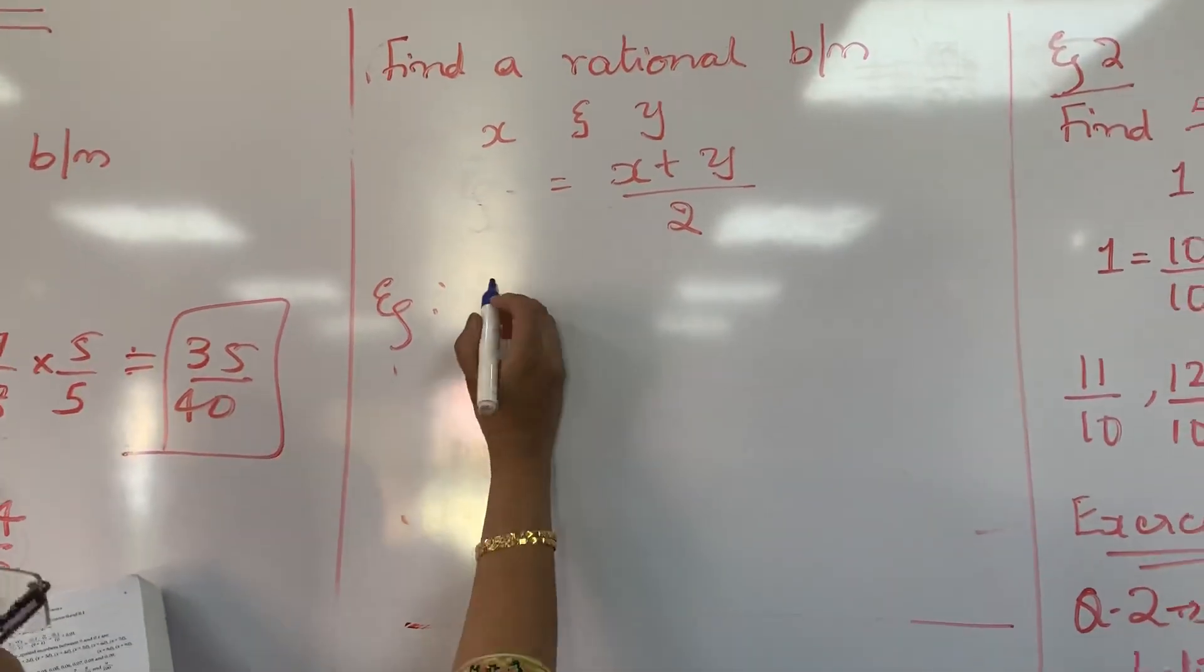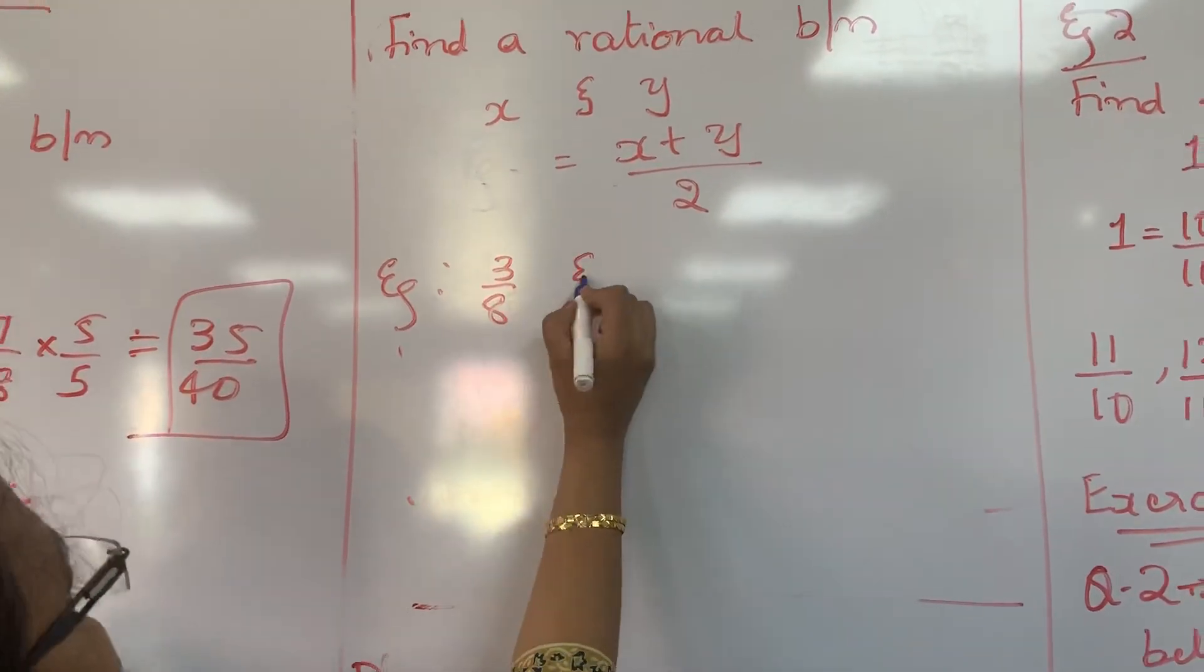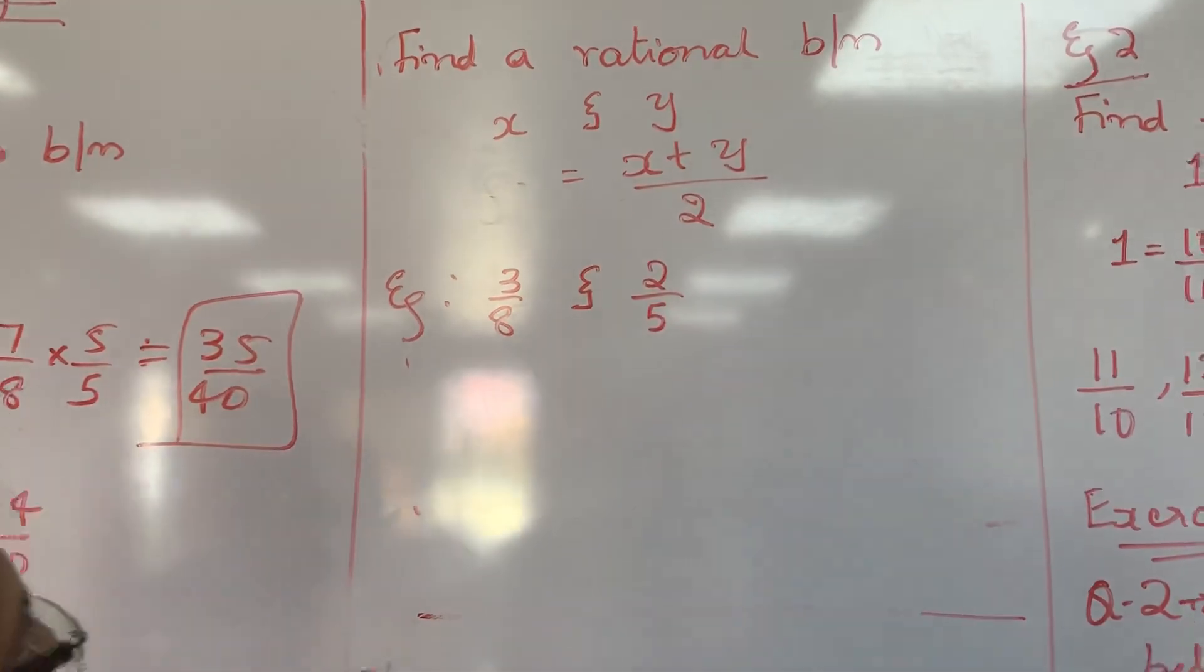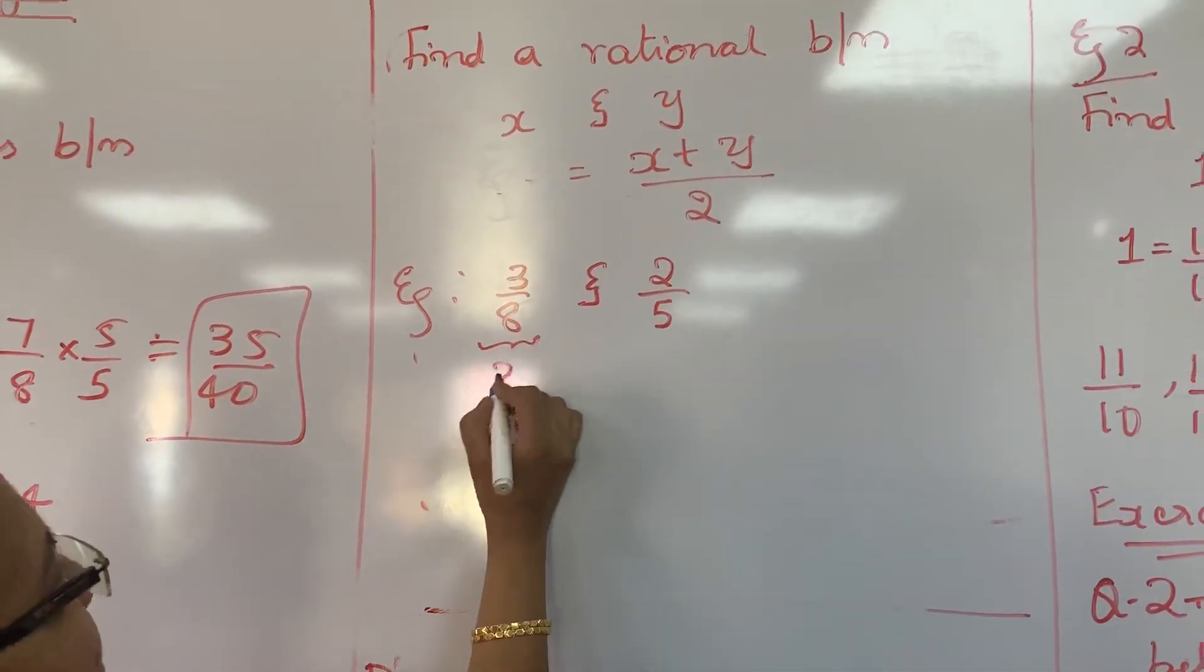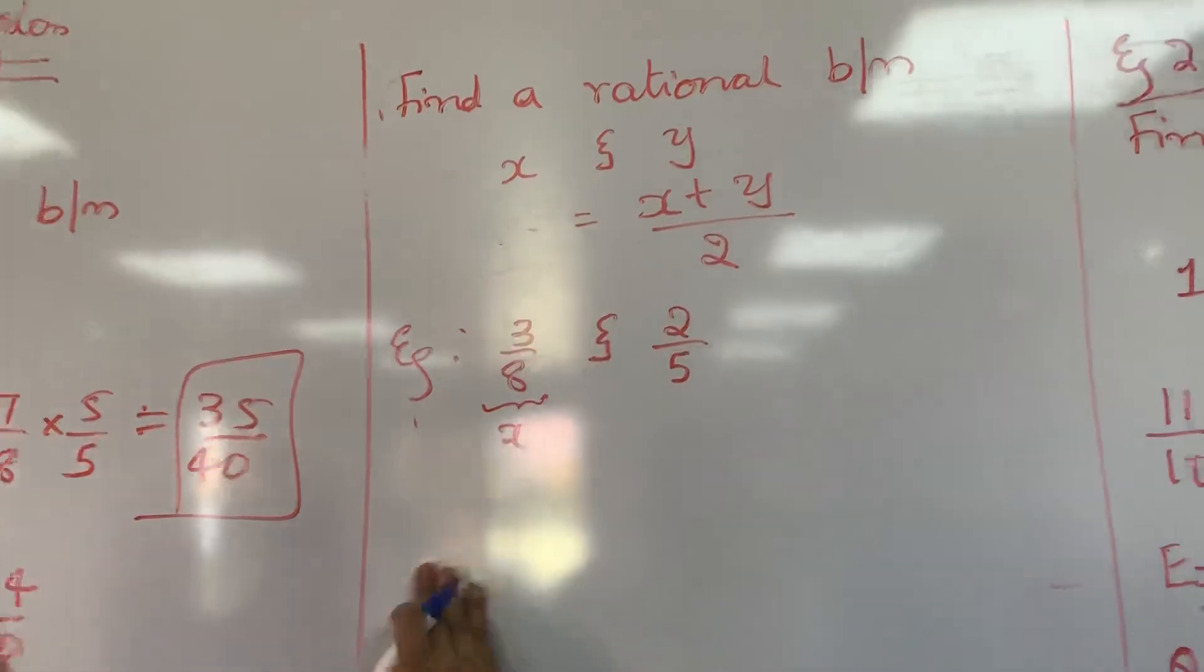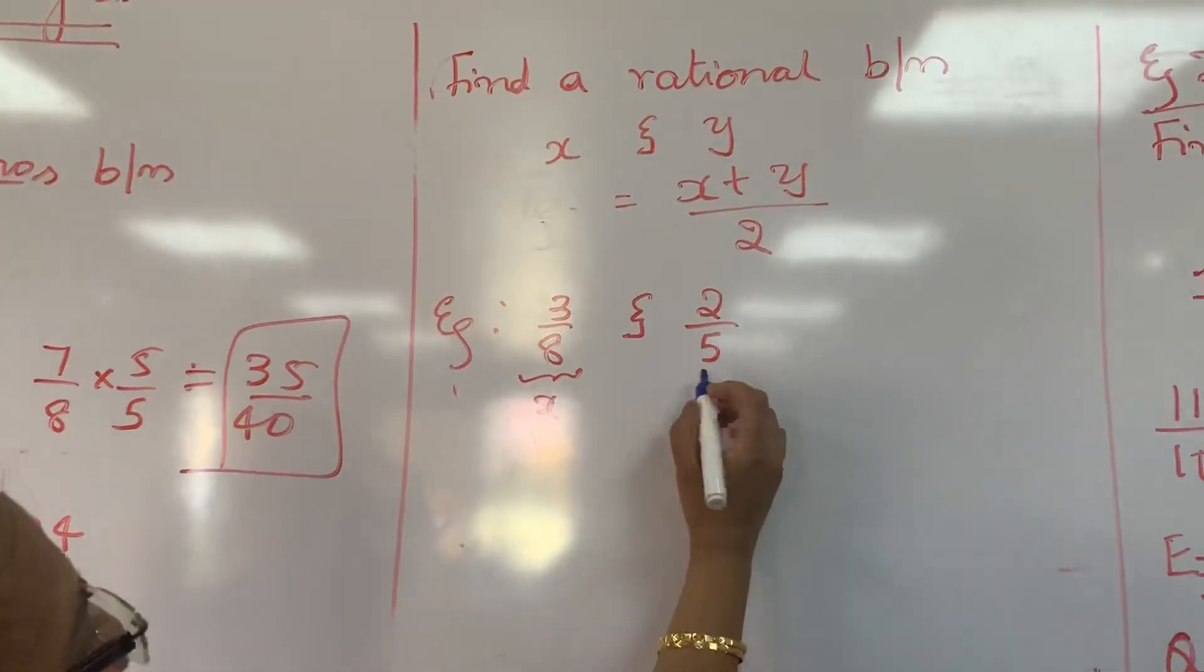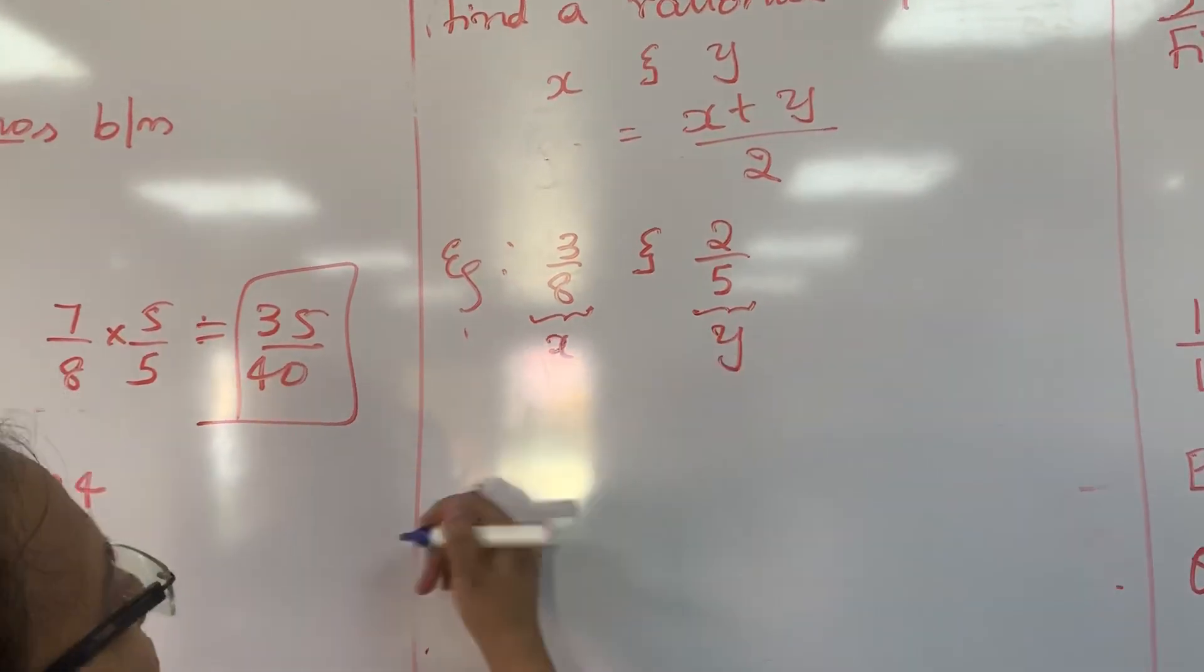...find a rational number between 3 by 8 and 2 by 5. So consider this full term as X. It is a rational number, fraction, be careful. 3 by 8 as X and 2 by 5 as Y.